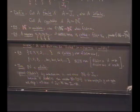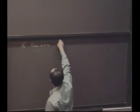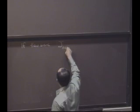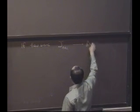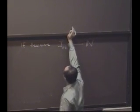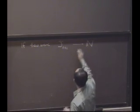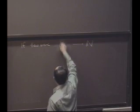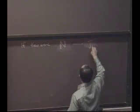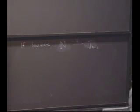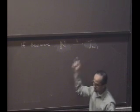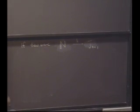We'll do it by contrapositive. We'll say if there were a bijection between J sub n plus one and N, and let's call this bijection, if you like, let's call it h. I'm going to do this backwards, sorry. N, J sub n plus one, I'll call it h. This is a bijection.